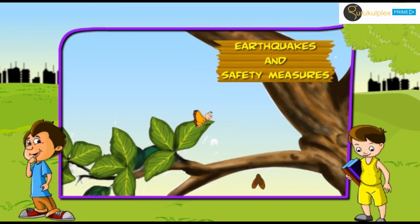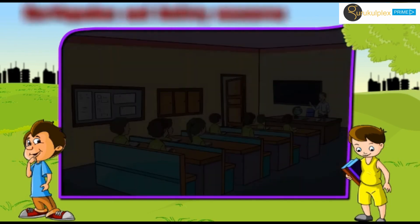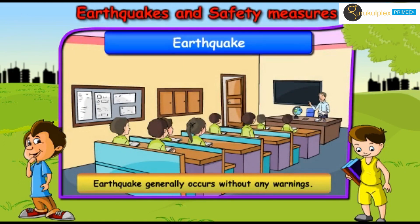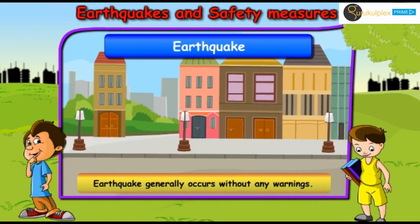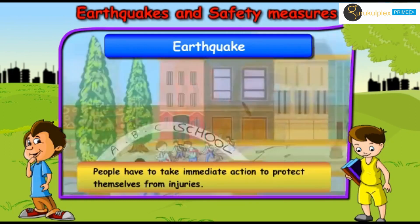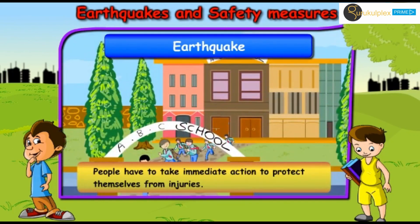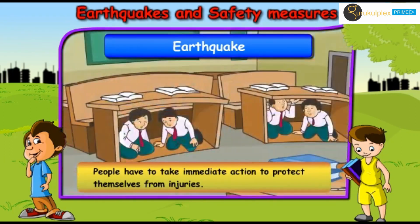Earthquakes and Safety Measures. In this chapter, we will understand the phenomenon of earthquake and learn about the safety precautions one must take during an earthquake. Earthquakes generally occur without prior warnings. As a result, people have to take immediate actions to protect themselves from injuries.